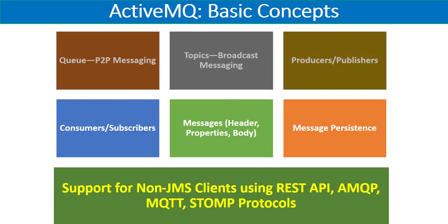The next concept is producer or publisher. When we use queues, the party producing the message is called a producer. When we use topics, we use the term publisher. You can use both terms interchangeably, but in general for topics we use publisher and for queues we use producer. The functionality is the same — both are producing messages which other parties are interested in and sending or pushing them to queues or topics on the ActiveMQ message broker.